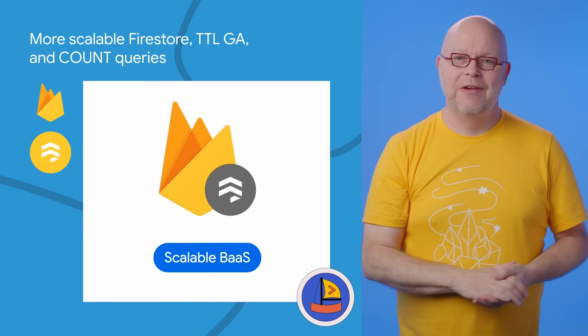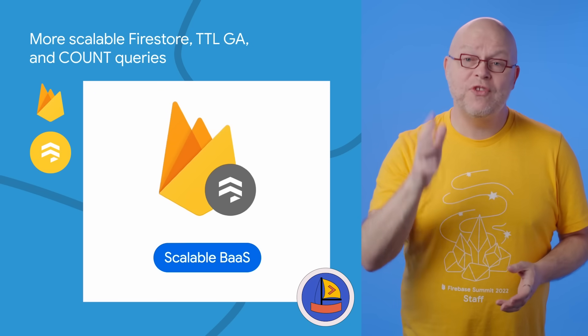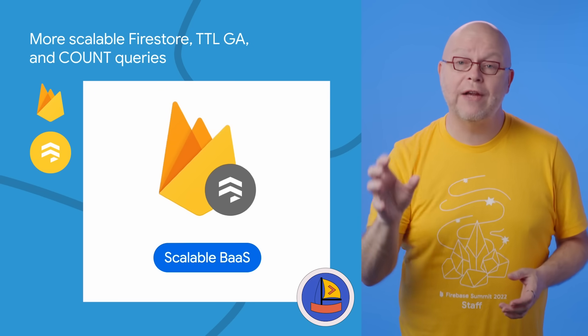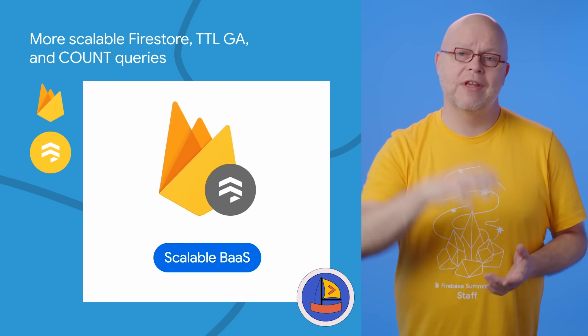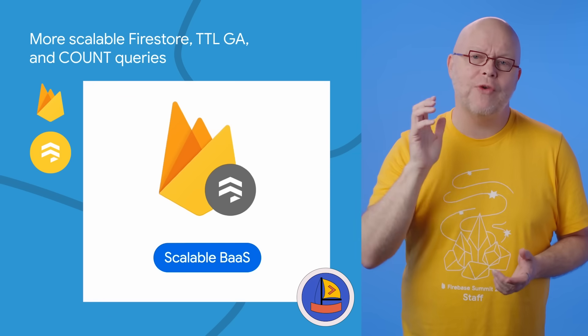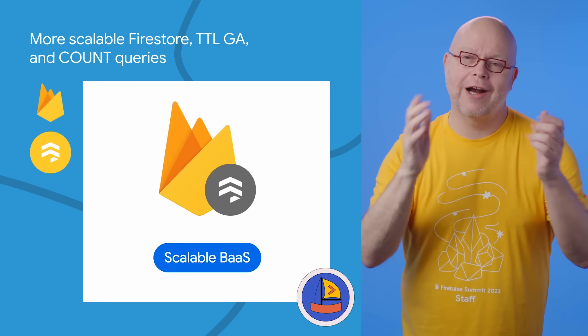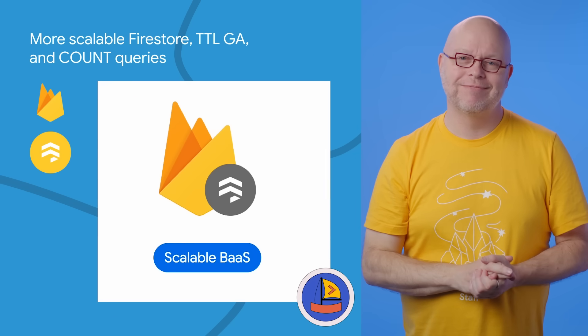First up is Firestore, where we have removed the hard limits for write throughput and concurrent active connections to better support your app's growth through large traffic spikes.